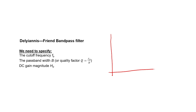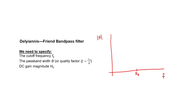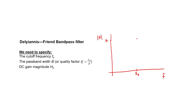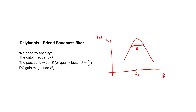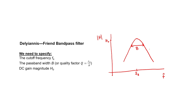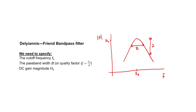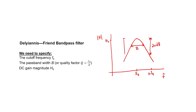What does a transfer function look like for a Deliyannis-Friend bandpass filter? We have a particular frequency, labeled F sub B, which marks the center of the passband. We have a passband gain of H0, and then a certain width in terms of the frequency B. The Deliyannis-Friend circuit is a 2-pole filter. It has one zero, which means that one pole is acting on the high-pass side and one on the low-pass side, giving us 20 dB per decade fall-off on either side.